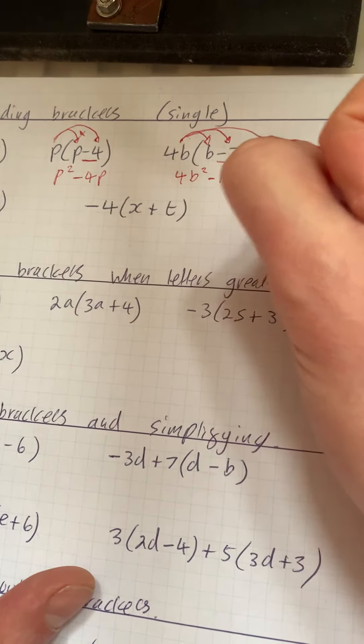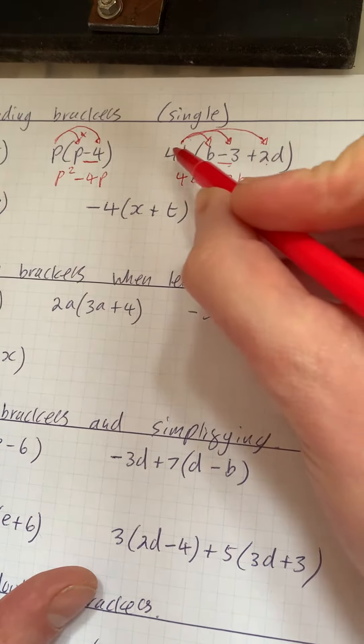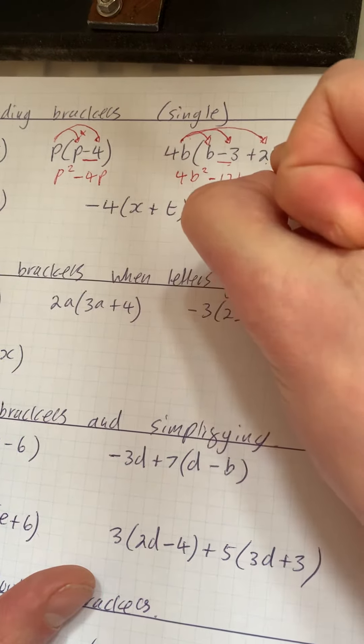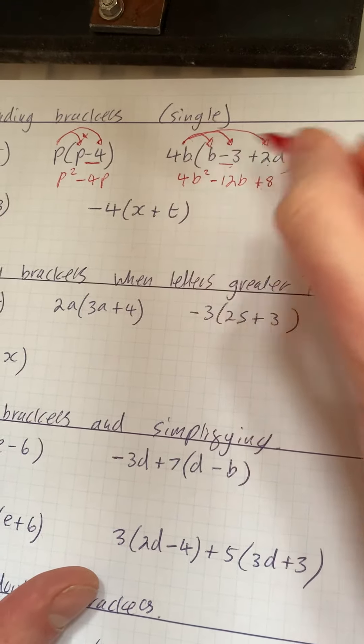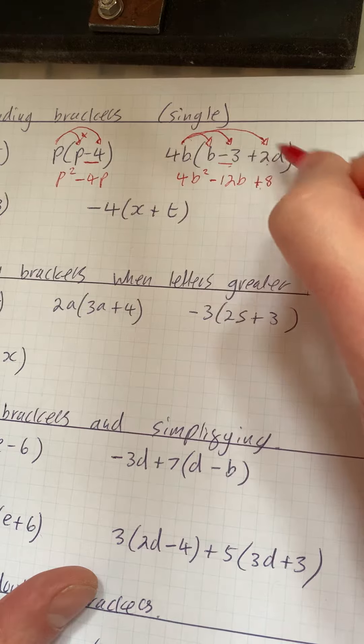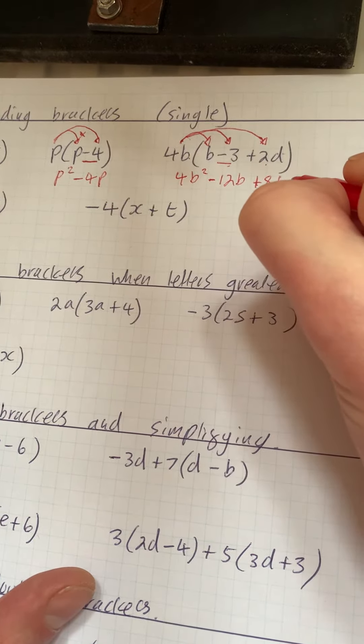We times the last one, so we've got 4b times 2d. Now 4 times 2 is 8. We've got b and d, they're not the same letters, so we can't add powers, so we just have to write bd.